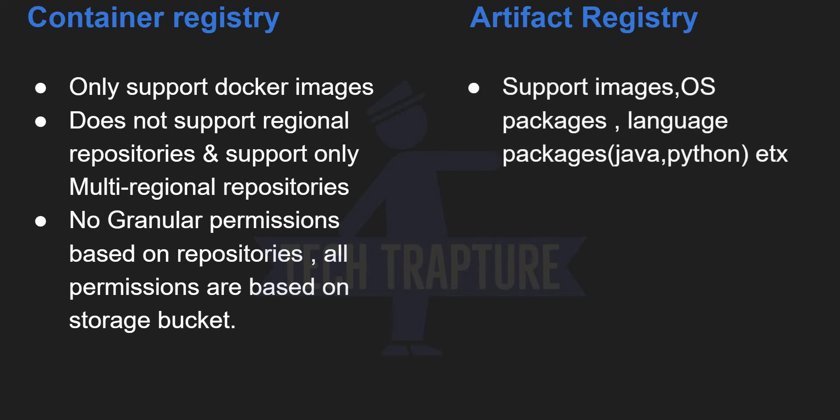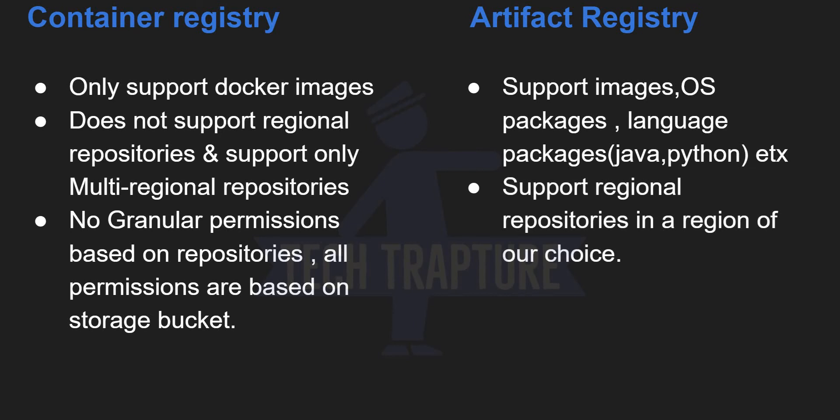All those limitations are overcome in Artifact Registry, which is an upgraded version of Container Registry. It supports Docker images as well as OS-level packages — Linux, Debian, or RPM packages — and also language packages for Java and Python. It also supports regional repositories, so you can create a repository in your own region like us-central1.